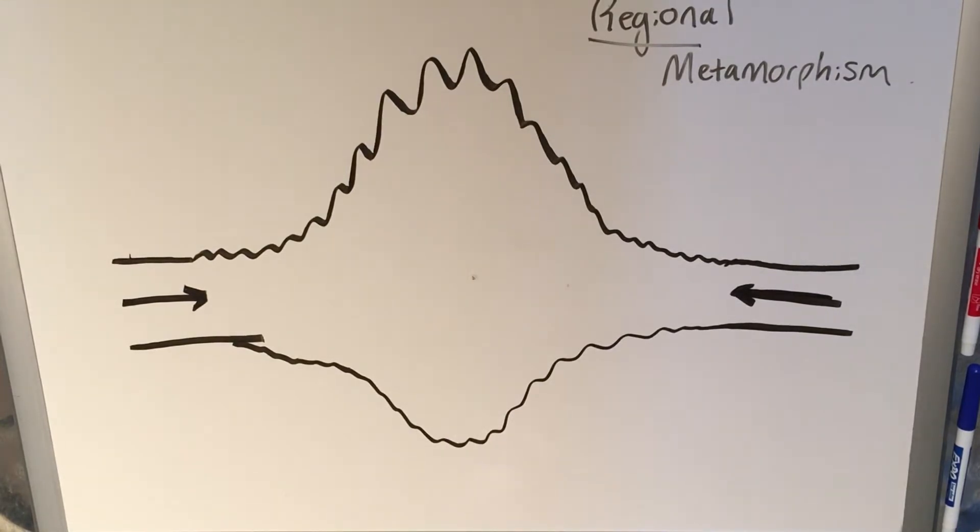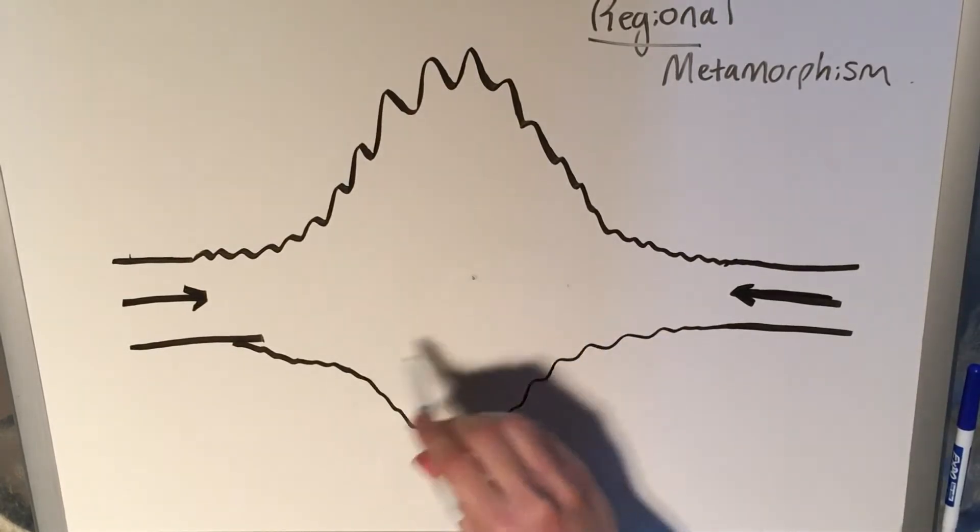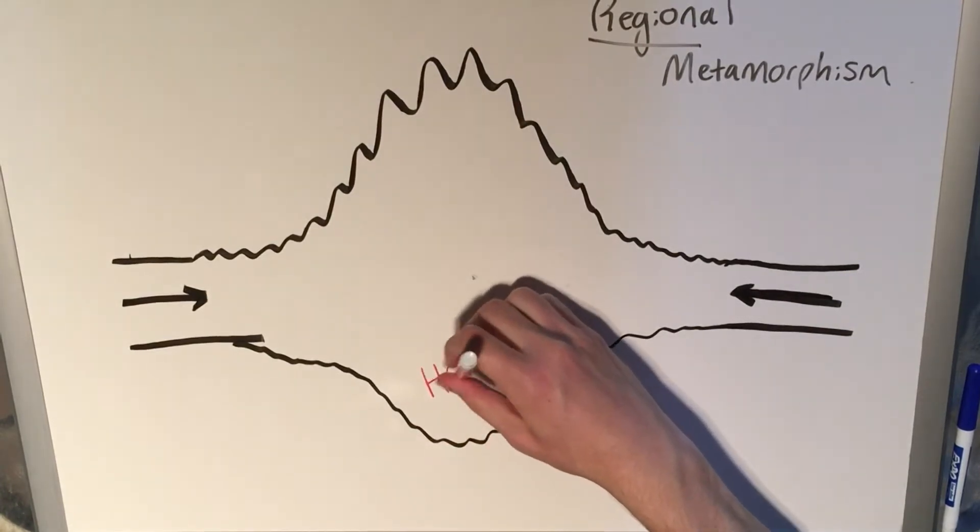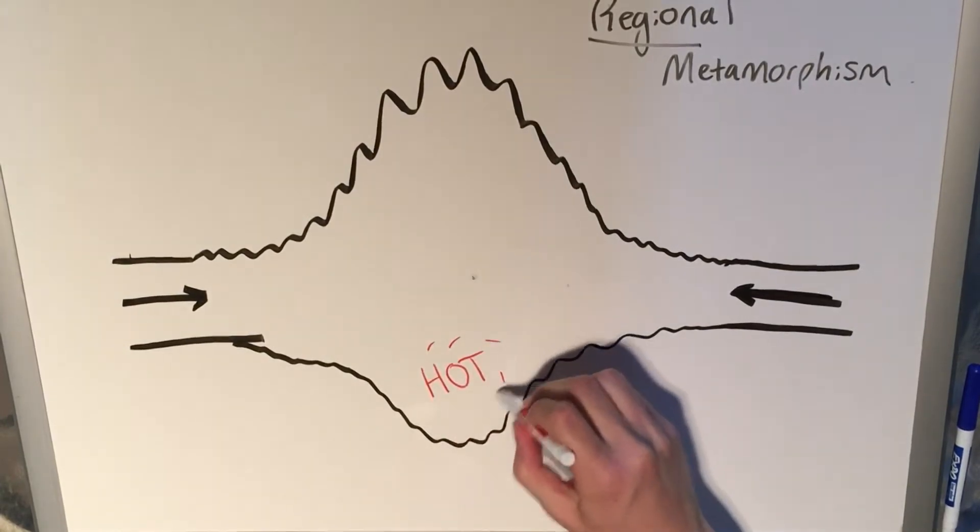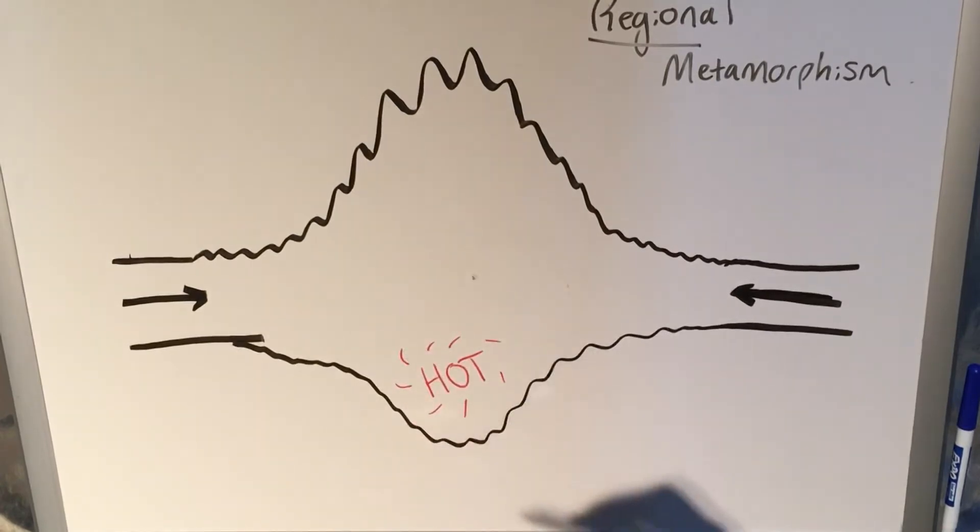Now, that's a basic definition, but something else that's good to know is that down here, in the root of the mountain, if you will, it's hot. Why is it hot? Because it's closest to the mantle. As you go deeper in the crust, you get hotter and hotter until you reach the mantle.